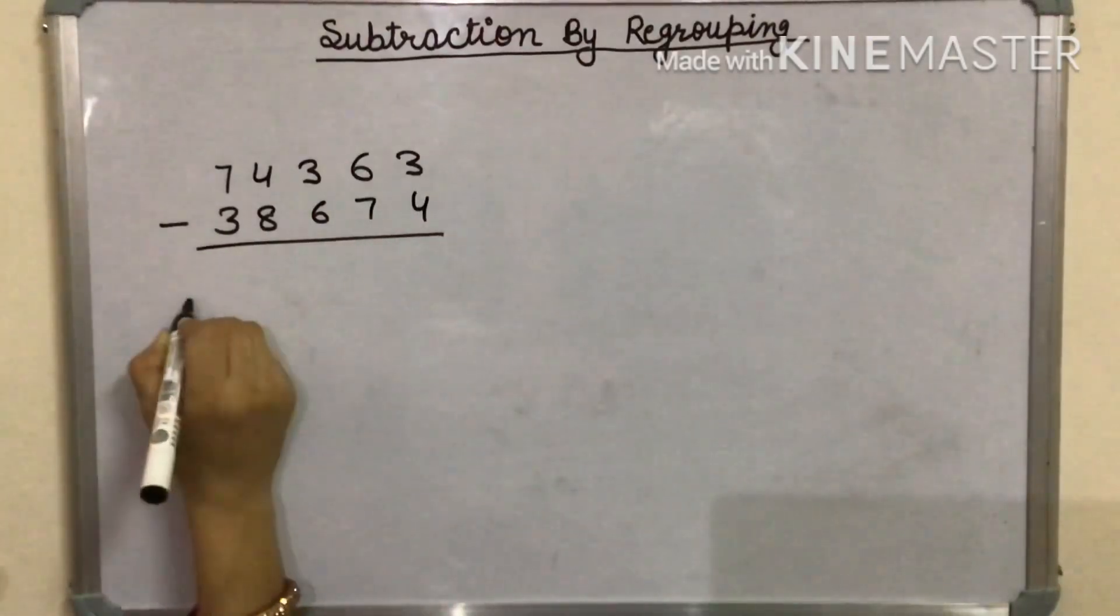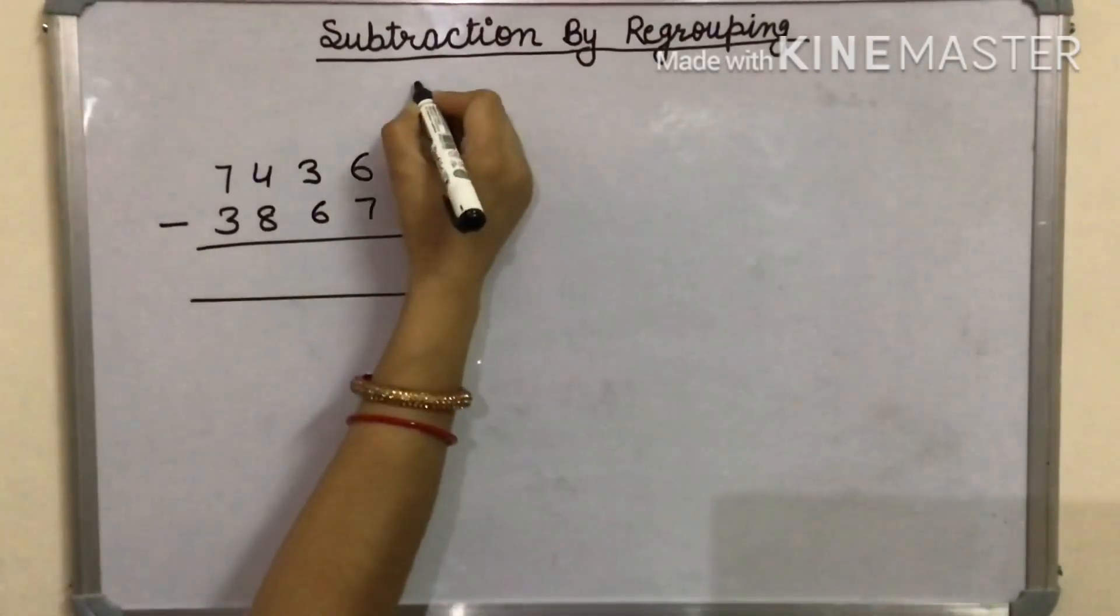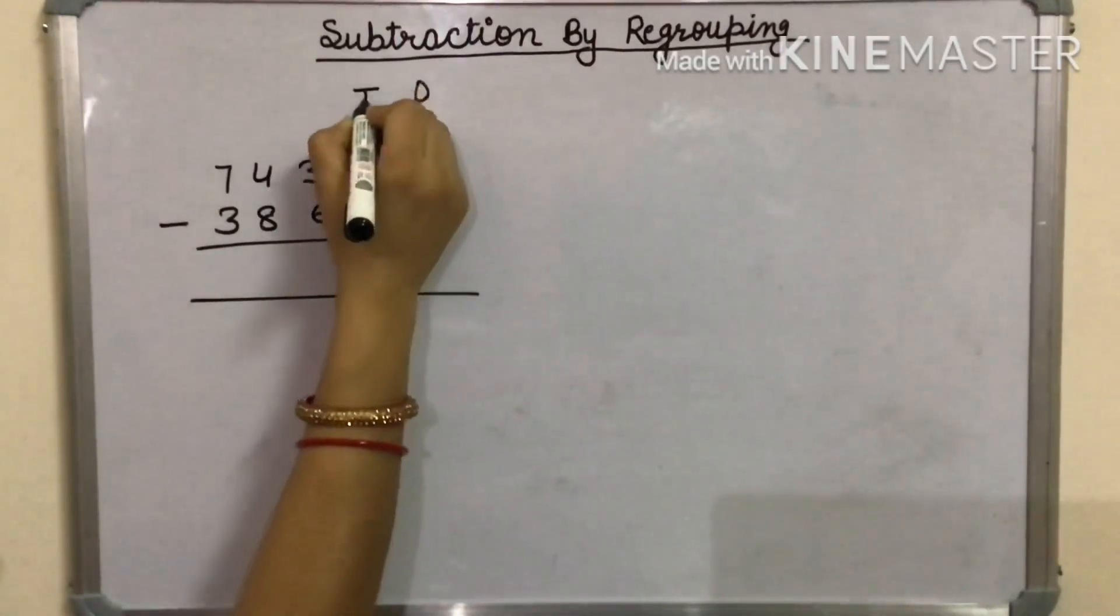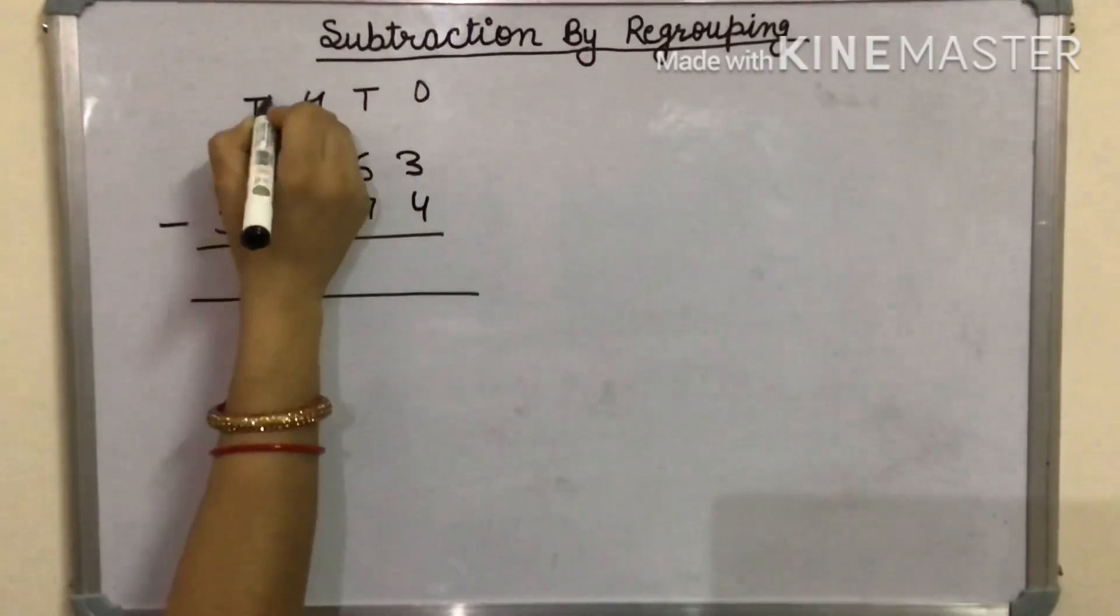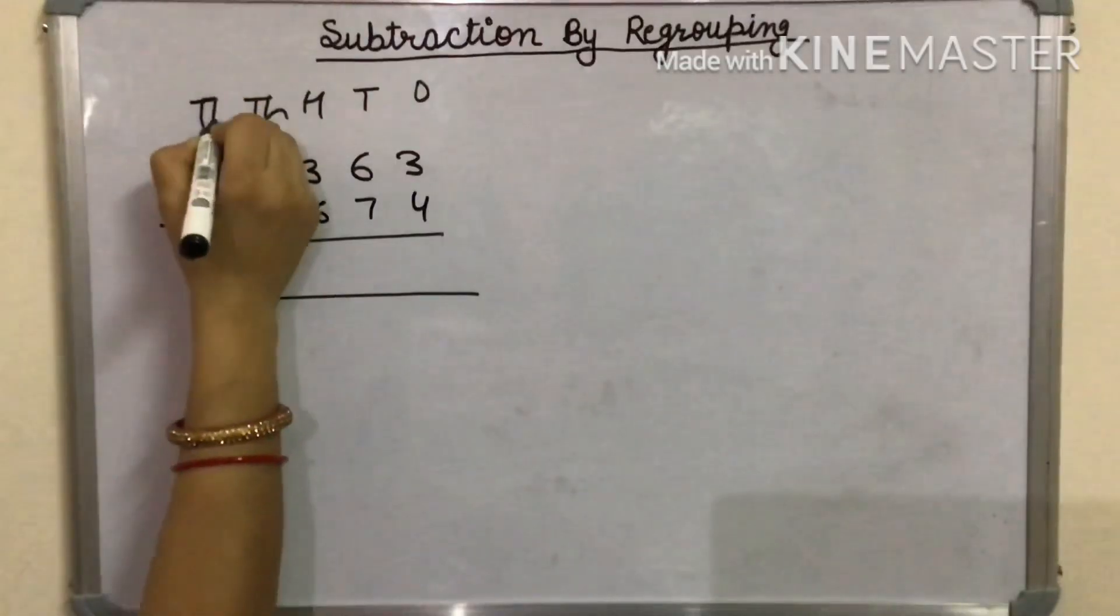Put the place values: 1s, 10s, 100, 1000, and 10,000.